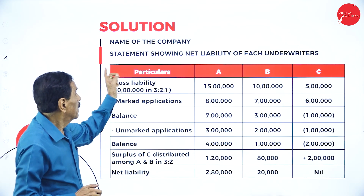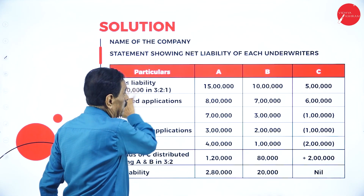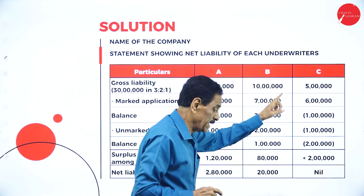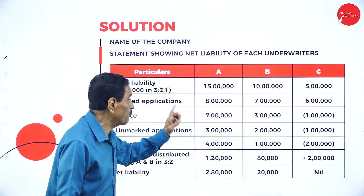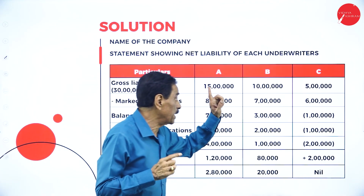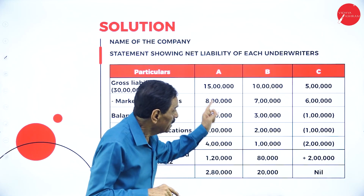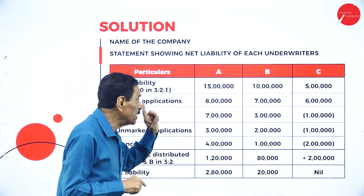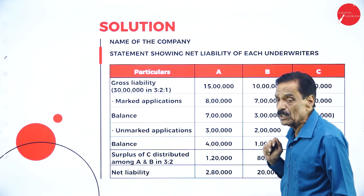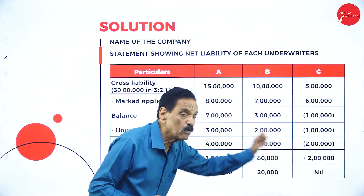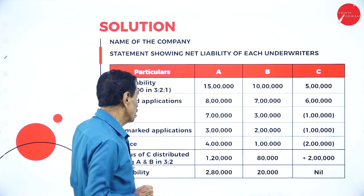Statement showing net liability of each underwriter. Gross liability: total 30 lakh shares in ratio 3:2:1 — A takes 15 lakh, B takes 10 lakh, C takes 5 lakh. Less marked applications as per the problem: A 8 lakh, B 7 lakh, C 6 lakh. Balance: A 7 lakh, B 3 lakh, C has a surplus of 1 lakh. Less unmarked applications distributed: 3 lakh, 2 lakh, 1 lakh. Balance: A 4 lakh, B 1 lakh, C has surplus of 2 lakh.